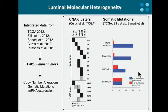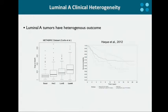But this heterogeneity is not only molecular. Luminal A is quite heterogeneous also clinically. While it has the highest median overall survival, it also has the most variable one, as you can see from the box plot. And it has been shown that the risk of late mortality persists in this group even after 10 years of initial diagnosis, and is actually greater in this subtype than in the others in the long term.